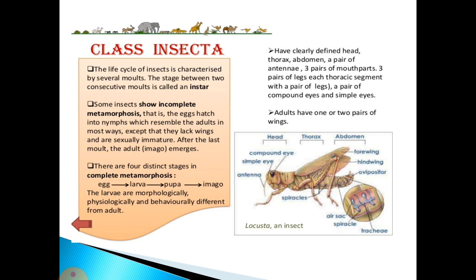The life cycle of insects is characterized by several molts; the stage between two consecutive molts is called an instar. Some insects show complete metamorphosis, others show incomplete metamorphosis. In incomplete metamorphosis, eggs hatch into nymphs that resemble the adult but lack wings and are sexually immature; after the last molt, the adult emerges. In complete metamorphosis, there are four distinct stages: egg, larva, pupa, and adult. The larvae are morphologically, physiologically, and behaviorally different from the adult.